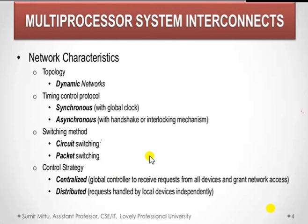The next strategy is network control. The strategies are centralized and distributed. In the centralized approach, a global controller receives and acts on requests. In the distributed approach, requests are handled by local devices independently.